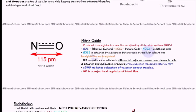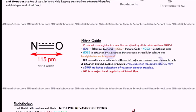NOS3 is activated by substances which cause an increase in intracellular calcium ions — the amount of calcium inside the cell. Things like acetylcholine and bradykinin, which are neurotransmitters, increase the intracellular calcium ions and therefore they activate nitric oxide synthase 3.